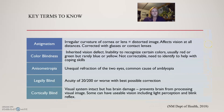Astigmatism is an irregular curvature of the cornea or lens which produces a distorted image. It affects vision at all distances and is corrected with glasses or contacts. Color blindness is an inherited vision defect — the inability to recognize certain colors, usually red or green, but rarely blue and yellow. It is not correctable, but if we identify it we can help students cope.